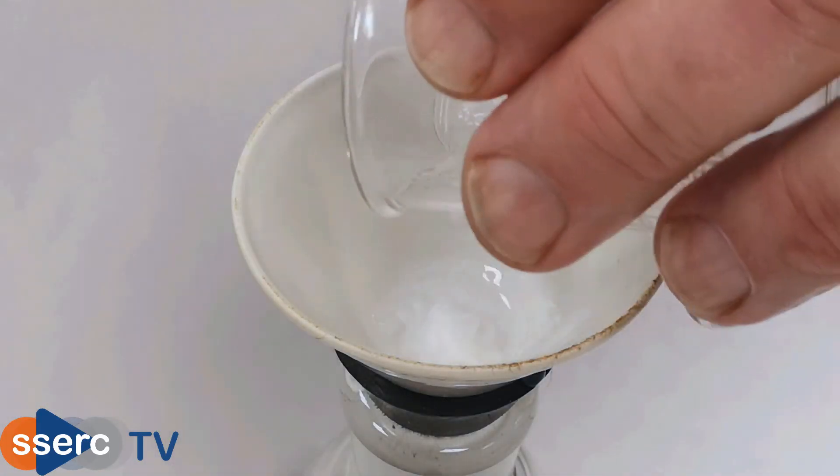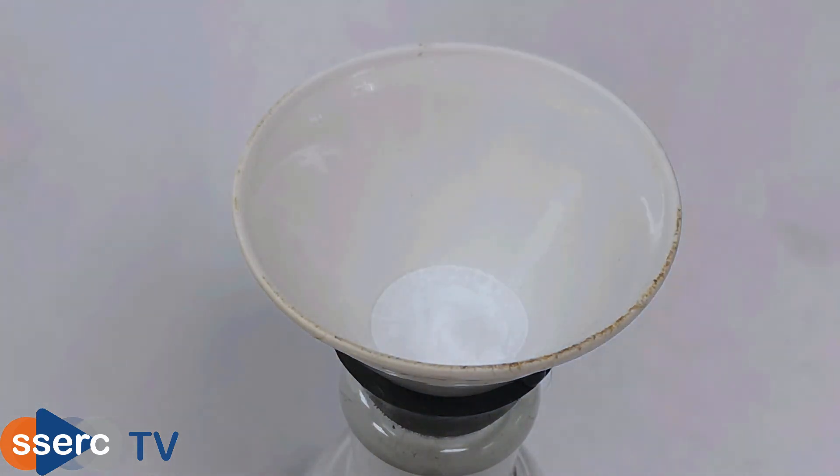We wash out the beaker with a few cubic centimeters of chilled ethanol and then leave it on the filter paper for a minute or so to remove all traces of the solvent.